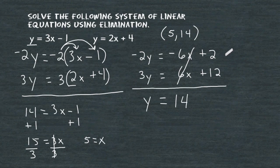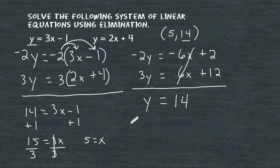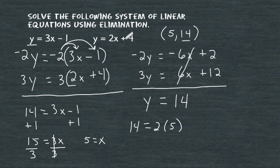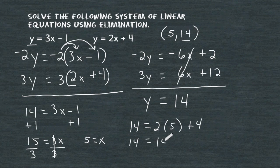To further verify our results, let's plug x equals 5 and y equals 14 into the other equation, y equals 2x plus 4. Substituting gives 14 equals 2 times 5 plus 4, which simplifies to 14 equals 10 plus 4 equals 14 — a true statement, verifying our results. And that is how you can solve a system of linear equations by graphing, using substitution, or by elimination.